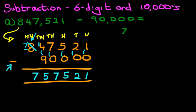Our answer is seven hundred and fifty-seven thousand five hundred and twenty-one. That is correct, so let's give it a nice big tick. That is how we do subtraction of a six-digit number and ten-thousandths using the vertical format.